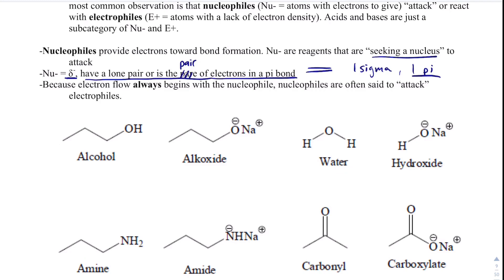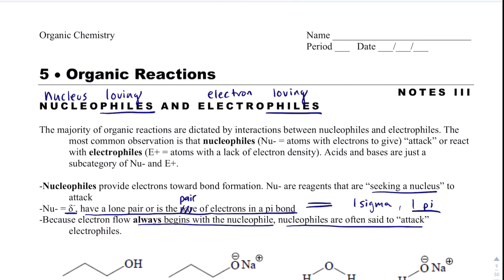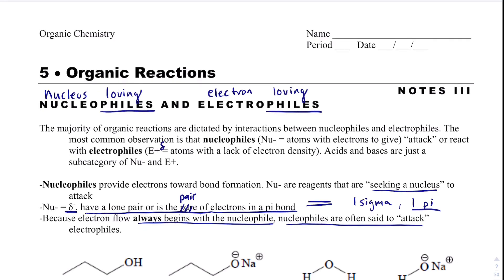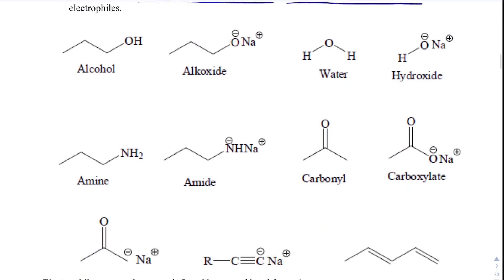Because electron flow always begins with the nucleophile, nucleophiles are going to be said to attack electrophiles. An electrophile is going to be something that is delta-positive, and it's something that lacks electron density.